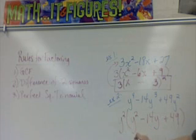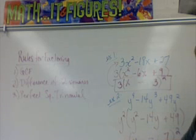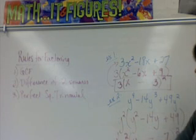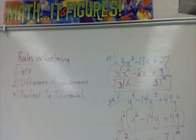Is this a perfect square? Yes, it is. The square root is y. Is 49 a perfect square? It is. The square root is 7. If I multiply these together and double, will I get 14? Yes, I will. Your sign is a minus. Put your quantity brackets squared and drop down your GCF. This right here is the factored form of y⁴ - 14y³ + 49y².